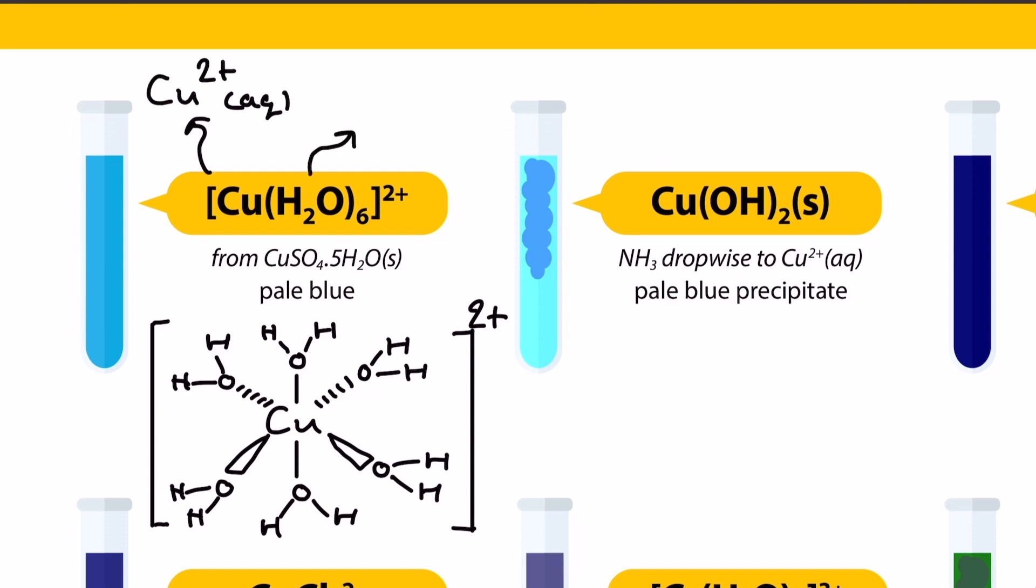This hexa-aqua complex ion is formed when copper sulphate is added to water, and we can represent this in lots of different ways depending on the reaction equation we're trying to demonstrate. For example, if I was to add dropwise ammonia or dropwise sodium hydroxide to a sample containing this complex ion...